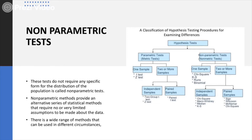Non-parametric tests are also an alternative series of statistical methods based on very limited assumptions. This is an important difference: in parametric tests, certain assumptions and hypotheses must be made, whereas non-parametric tests are based on very limited assumptions and do not rely on any specific assumptions. There is a wide range of differences and tests which are carried out to study parametric and non-parametric tests.